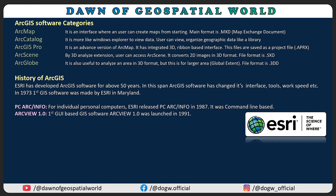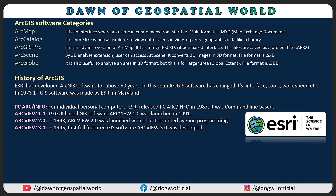For GUI-based GIS software, ArcView 1.0 was launched in 1991. ArcView 2.0 was launched with object-oriented Avenue programming. In 1995, the first full-featured GIS software, ArcView 3.0, was developed. ESRI then skipped some major releases like ArcView 4, 6, and 7, and directly jumped to ArcGIS 8.0.